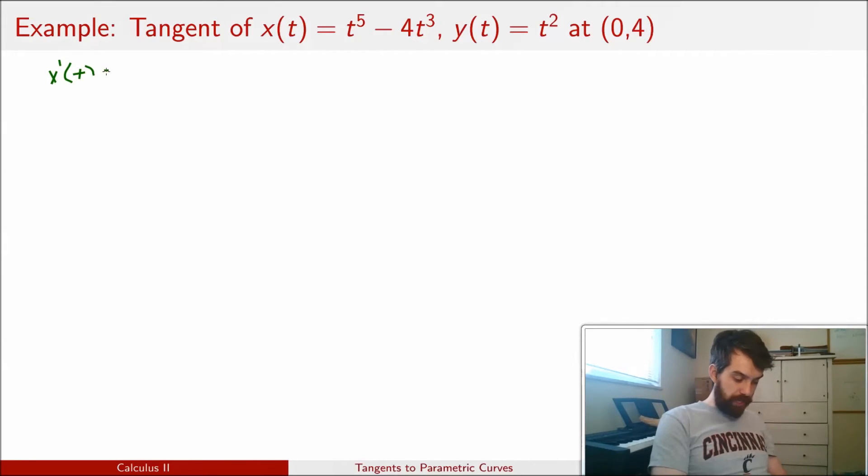So x prime of t is going to be equal to 5t to the fourth minus 12t squared. And y prime of t is going to be equal to 2t. Now if I think about how I normally do this, I would take the value of t and I would plug it in and I'd say x prime at some particular number. But the problem is, I don't know what value of t is going to give me the point x equal to 0, y equal to 4.